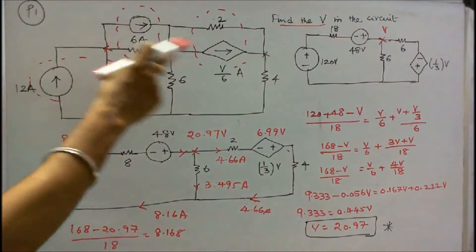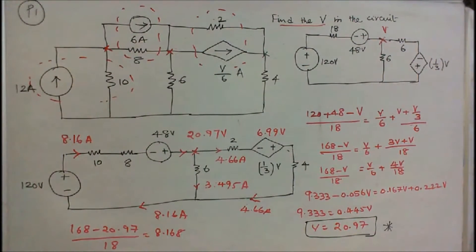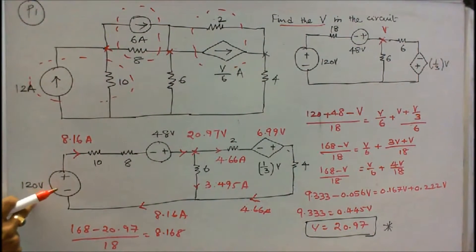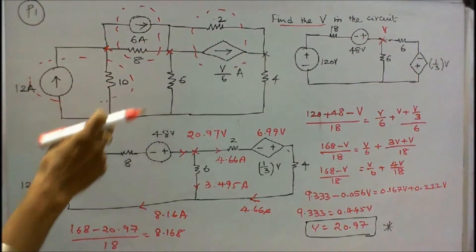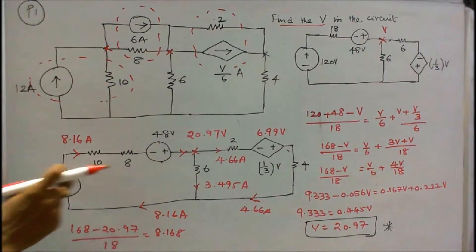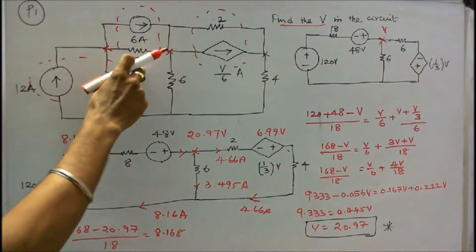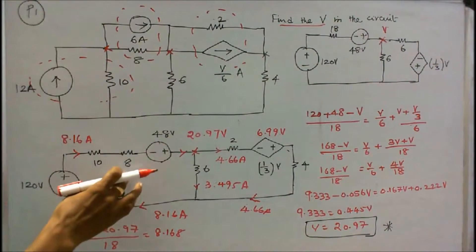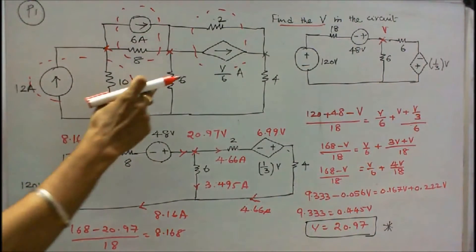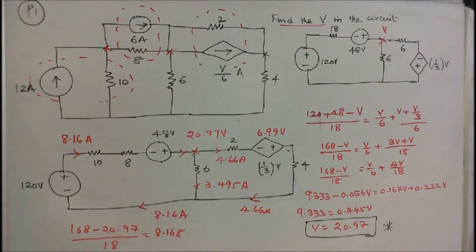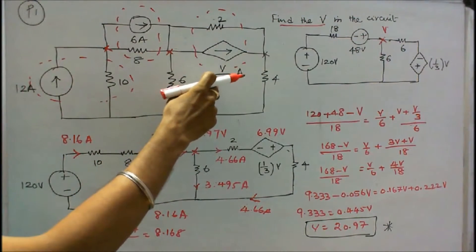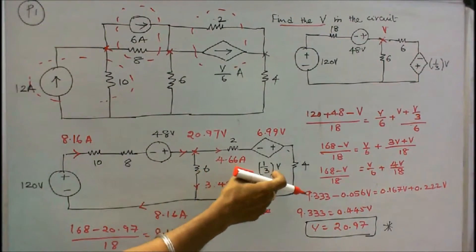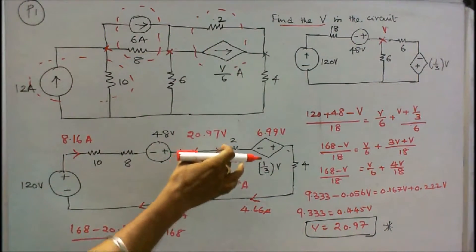First step, I convert the current source into an equivalent voltage source. Here this source is 12 into 10, that is equal to 120 volts. The 10 ohm resistor is connected in series with this. Now this is 8 into 6, that is equal to 48 volts. The 8 ohm resistor is connected in series with this. This is a 6 ohm resistor. And this is 2 into V divided by 6, that is equal to V/3 volts, and the 2 ohm resistor is connected in series with this.